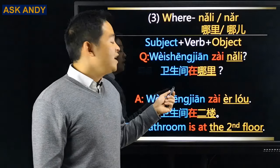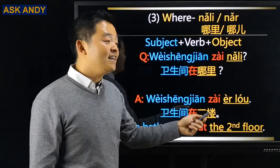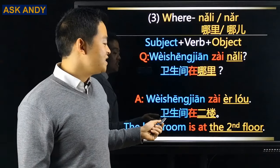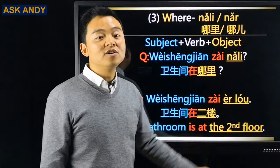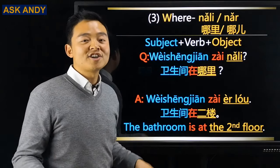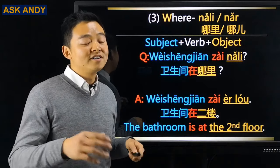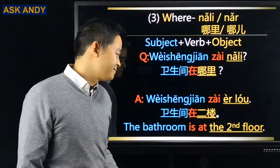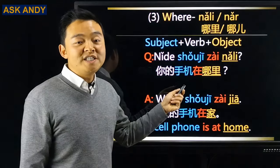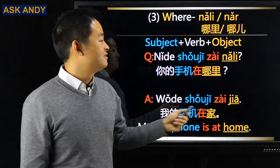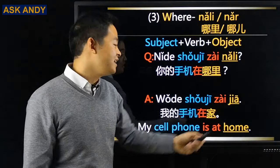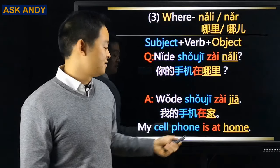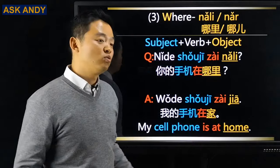卫生间在哪里? → 卫生间在二楼 (The bathroom is on the second floor) — in China, many bathrooms in shopping malls are on the second floor. 你的手机在哪里? → 我的手机在家 (My phone is at home). Quote and replace.